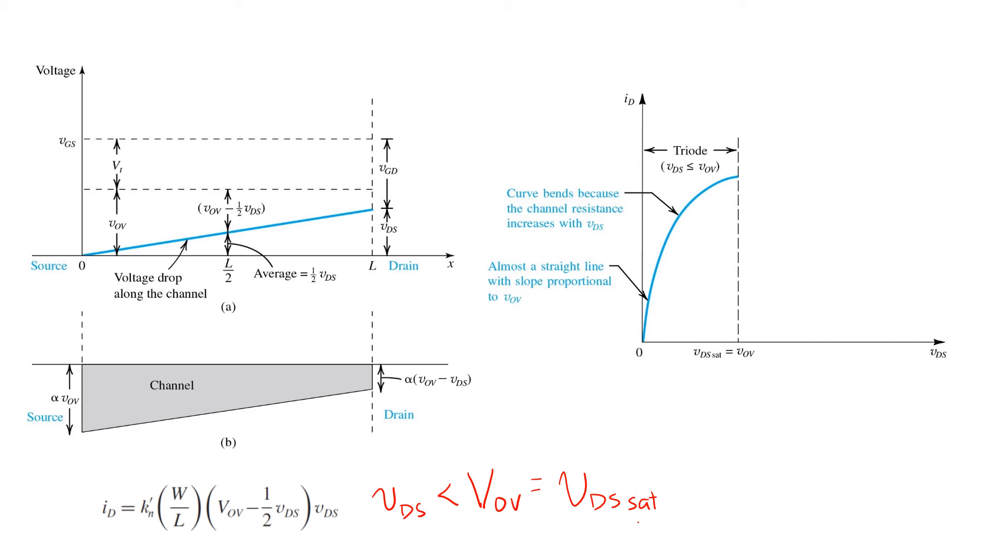Now if you just look at this expression, what happens when VDS approaches VOV? In fact, at that point, the curve becomes perfectly flat. And if we substitute in VDS equals VOV into this expression, we would see that it reaches a value of one-half KN VOV squared.